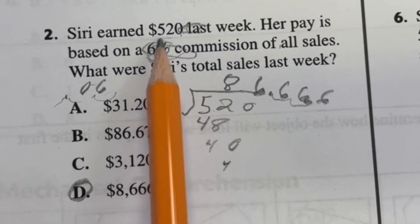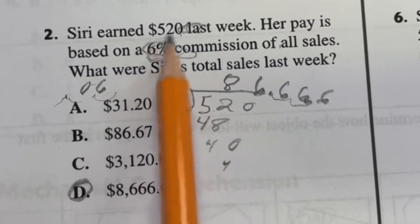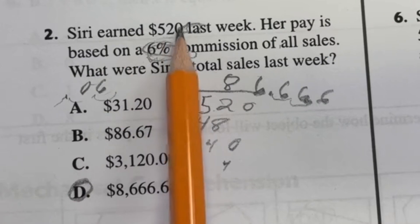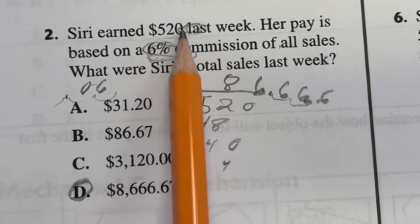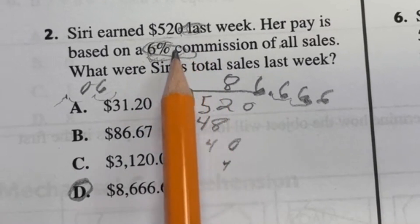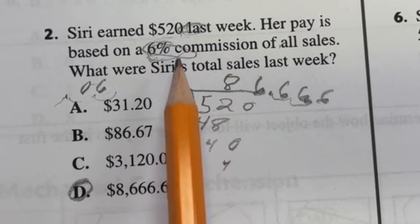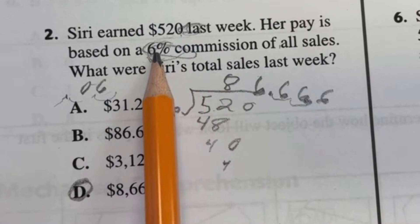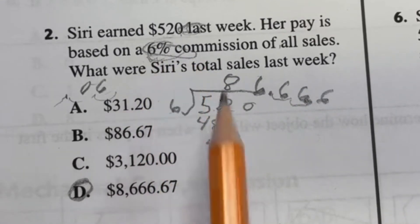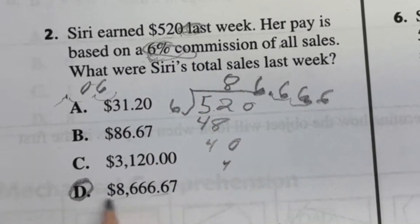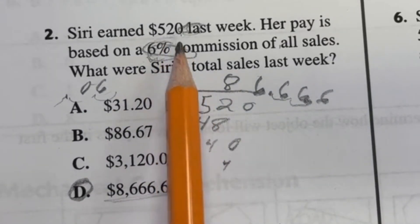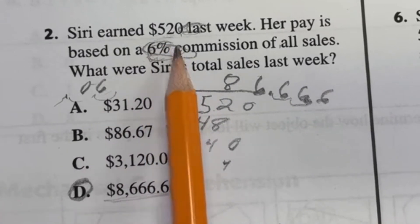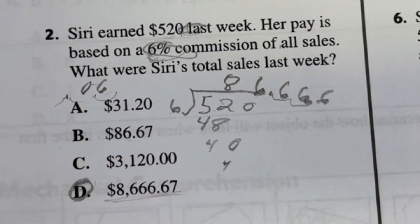The first thing I'd do is figure out about how much money that is. I know that ten percent — instead of six percent — would just mean adding a zero to make it $5,200. When you take ten percent of something, you just move the decimal place over one, so $520 is ten percent of $5,200. If this is only six percent, then the answer has to be larger than $5,200. Looking at the answer choices, there's only one option larger than $5,200, so right away I can say the answer must be D — and you can solve it in a matter of seconds.